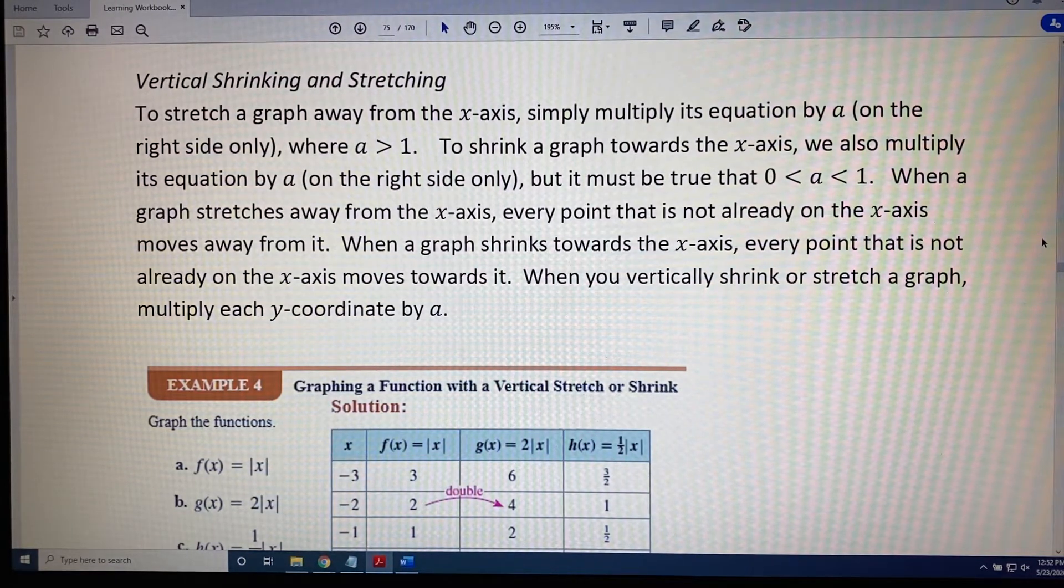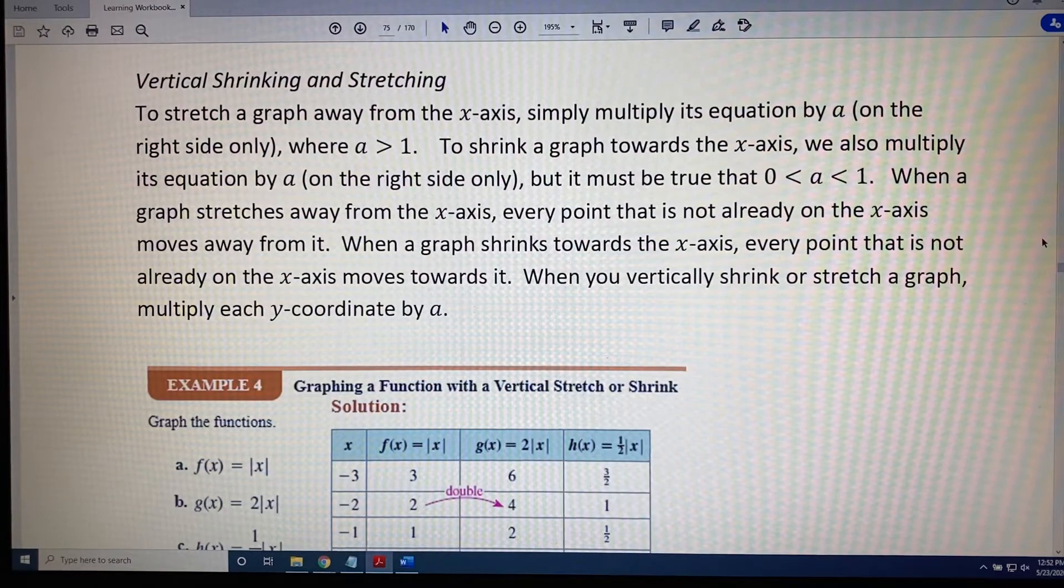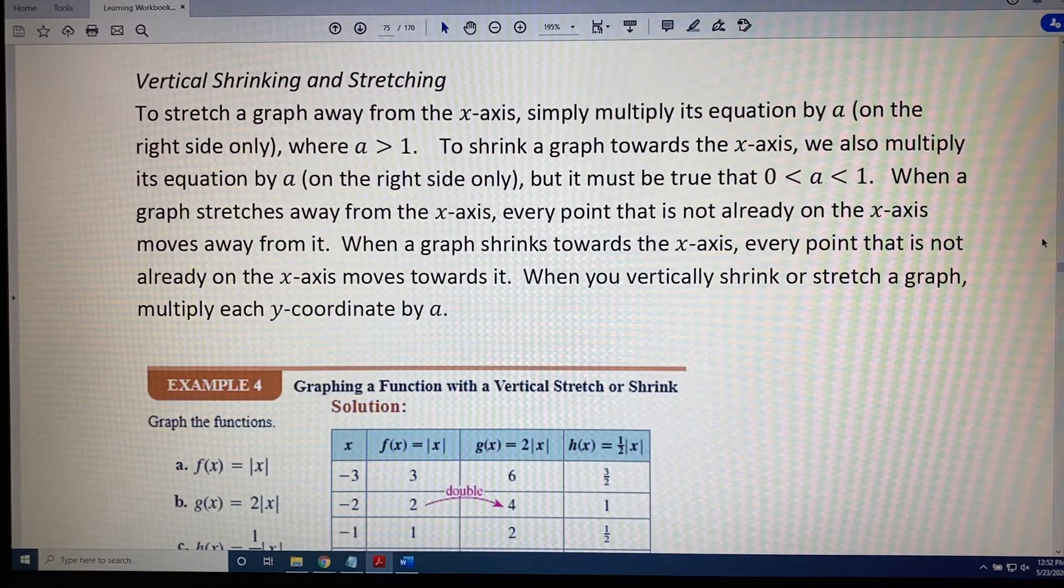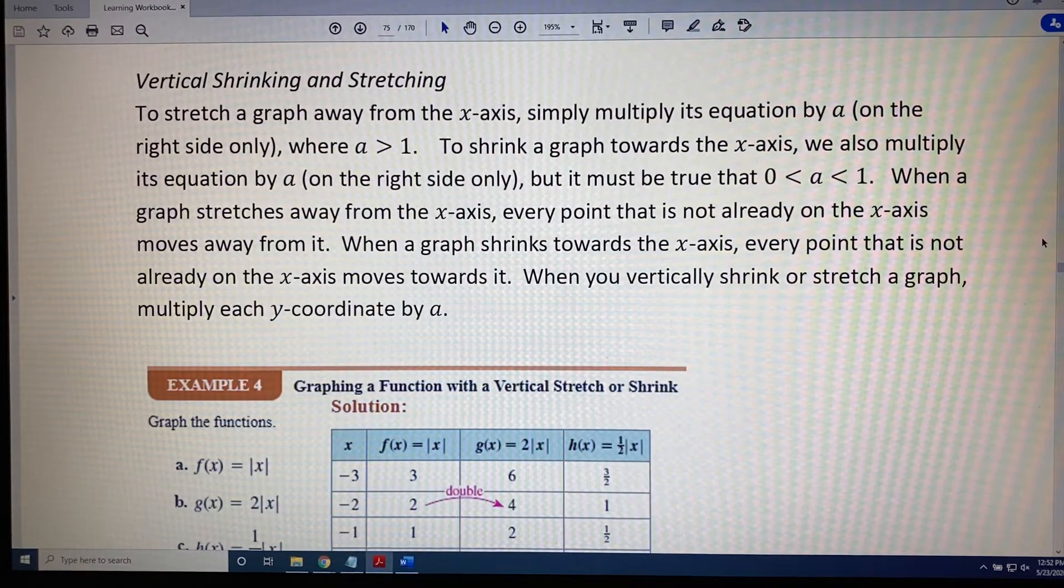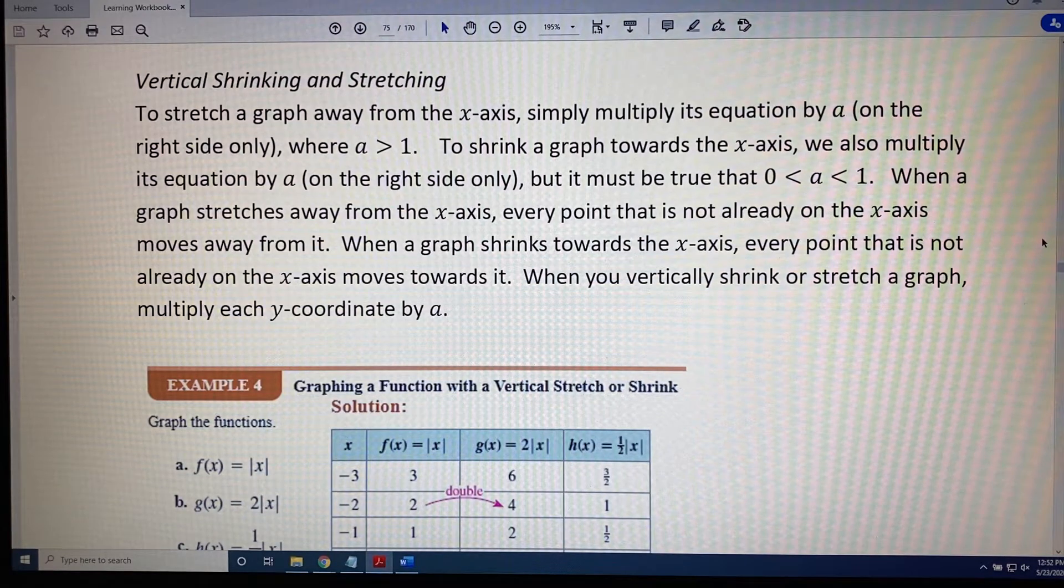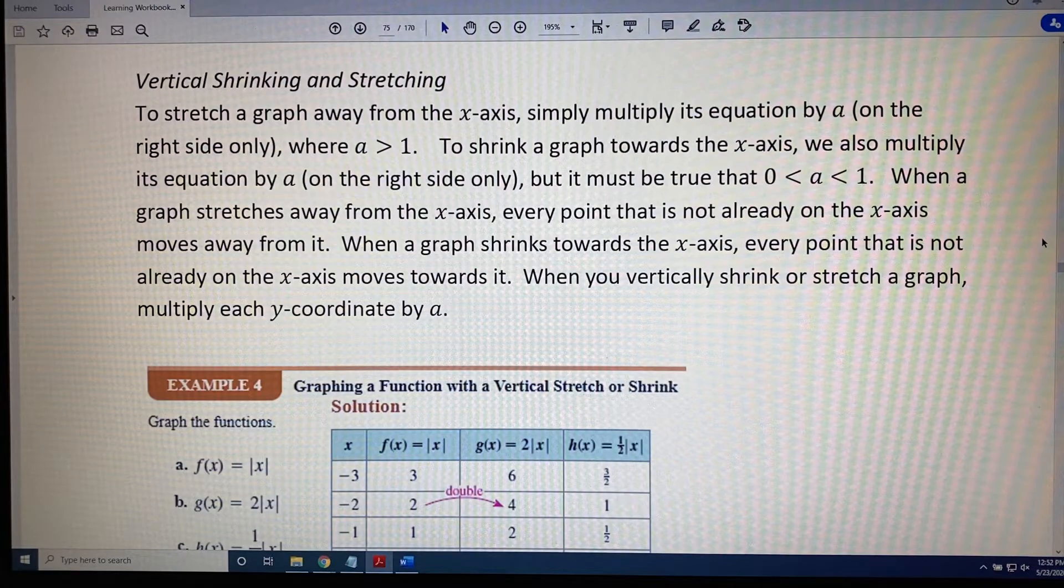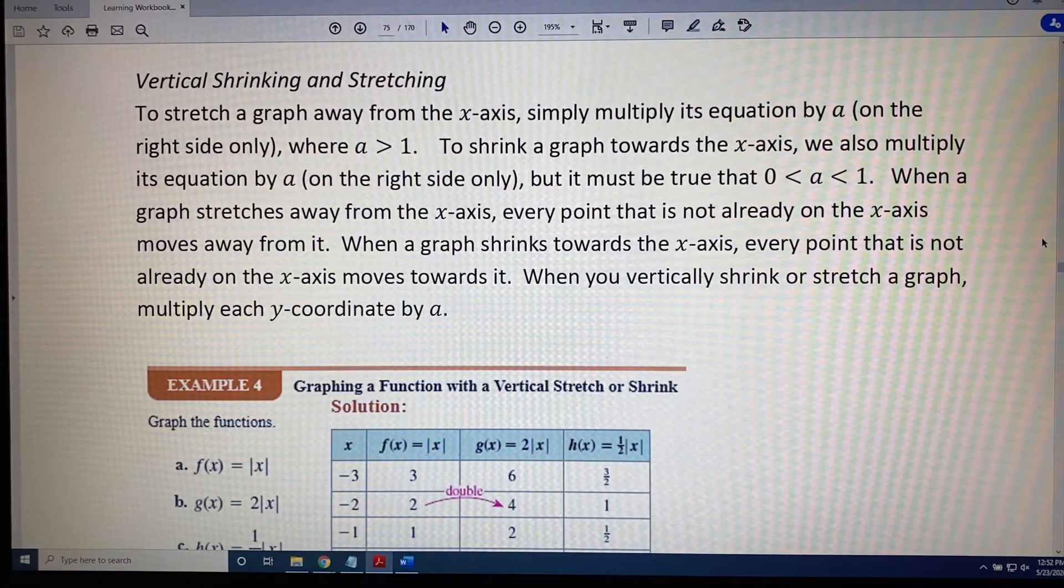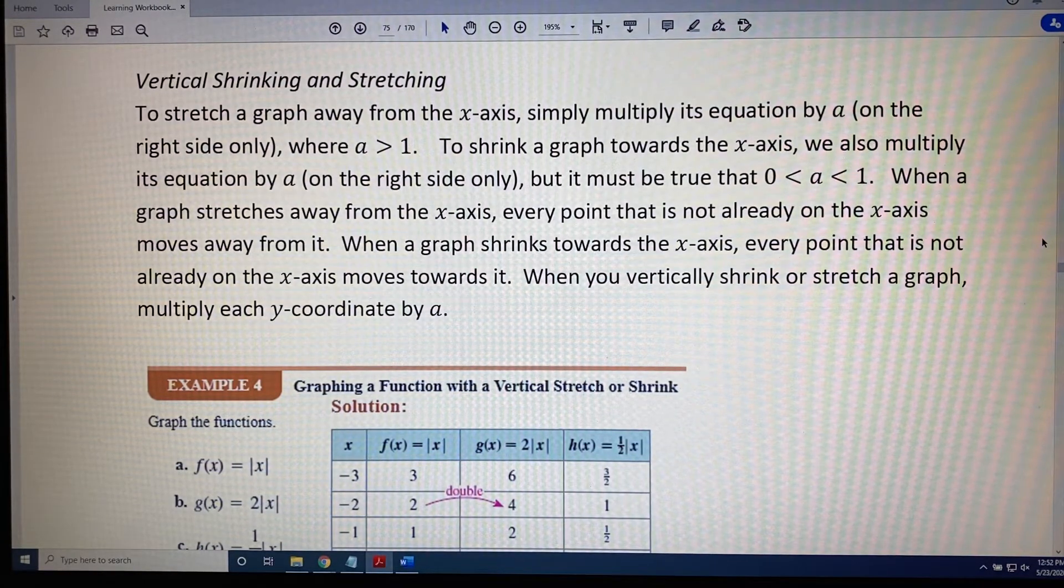When a graph shrinks towards the x-axis, every point that is not already on the x-axis moves towards it. When you vertically shrink or stretch a graph, you multiply each y-coordinate by a. Let's look at an example.